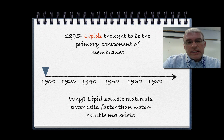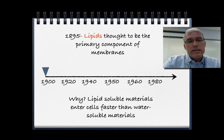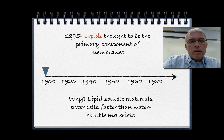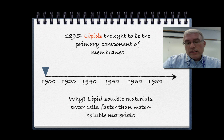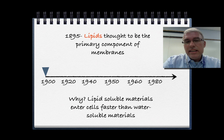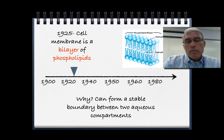Starting around 1895, scientists figured out that the cell membrane is made up mostly of lipids — those oily macromolecules built from fatty acids and glycerols. These are the primary components of cell membranes. We know this because materials that dissolve in lipids pass through cell membranes faster than water-soluble materials. Hydrophobic materials, like other lipids, pass through quicker, leading scientists in the late 1800s to conclude that cell membranes were made from lipids.